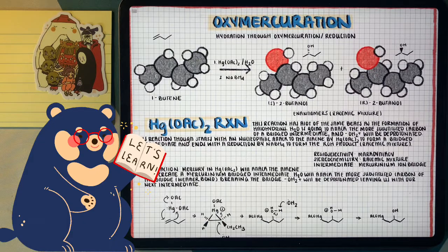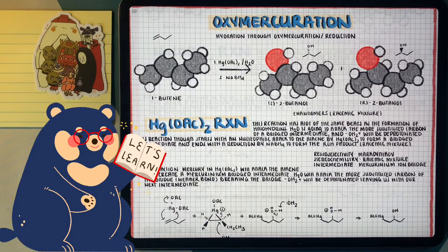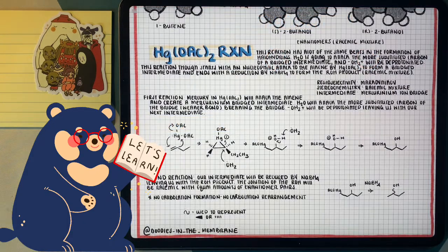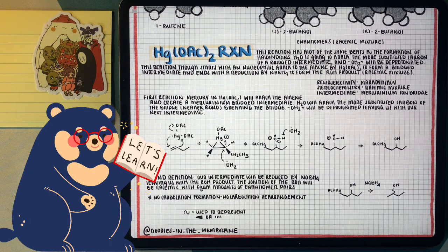This is why it's called oxymercuration reduction, even though we're oxidizing the alkene to alcohol. So this reaction starts off with the alkene reacting with mercury acetate to create an intermediate like we've seen before, definitely with the halogenation of alkenes. Water, the solvent, is going to attack the more substituted end of our intermediate, get deprotonated, and leave us with an alcohol with a mercury acetate attachment.